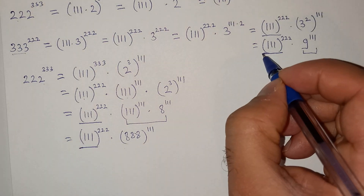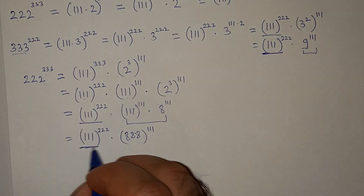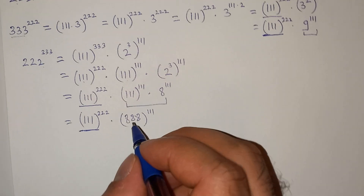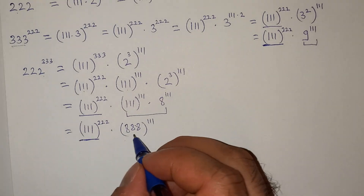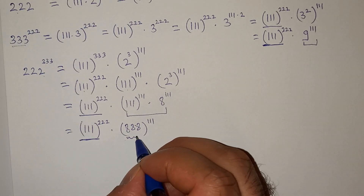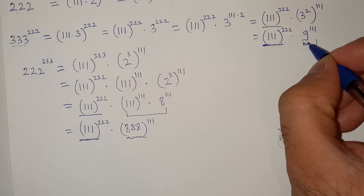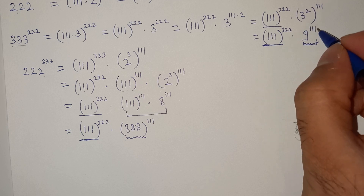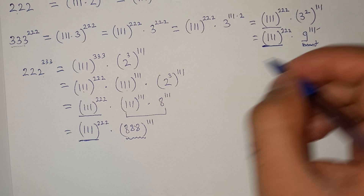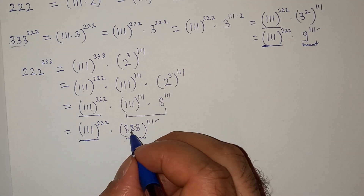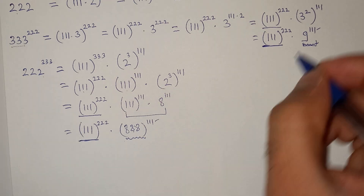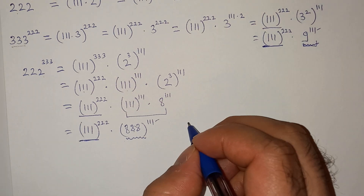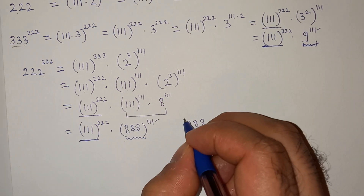Again, this term is the same. Now can you tell me whether this number is greater or this number is greater? We can see that the exponent is the same, but the base — triple 8 is greater than nine.